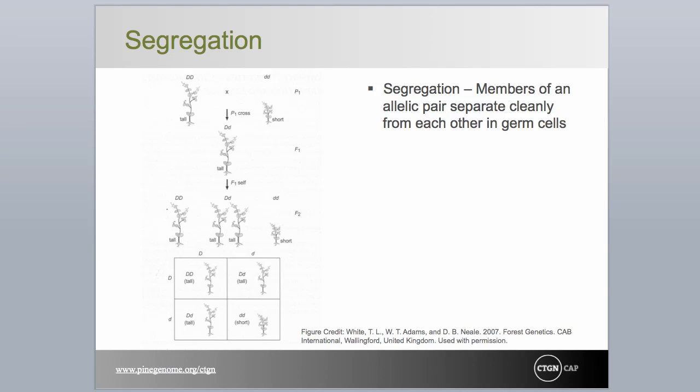In addition to defining the basis of hereditary as due to factors or genes, Mendel defined two other important genetic concepts: segregation and independent assortment. Segregation refers to the behavior of alleles at a single locus. During meiosis, or the production of germ cells, alleles separate cleanly and are expected to be represented equally in the next generation. Exceptions to this 1-to-1 expectation occur when one of the alleles may confer a significant decline in fitness, such as lethal or semi-lethal effects, resulting in segregation distortion.